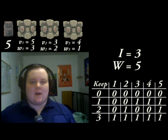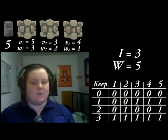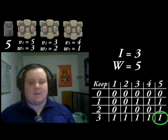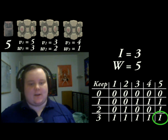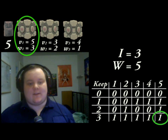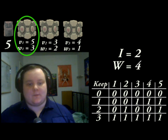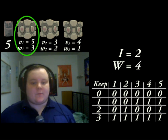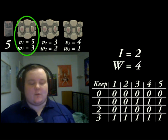We need to look at row I, column W in the keep table. If this is a 1, add the item to the knapsack, which we do in this case. Item 3 has a weight of 1, so we take that off W. Now go to item 2, and again look at row I, column W.